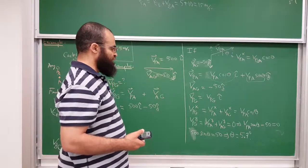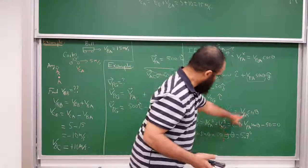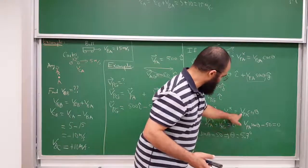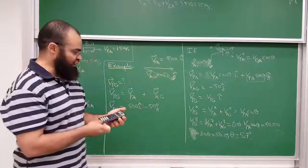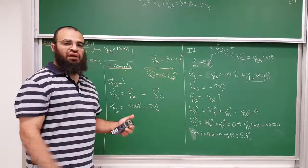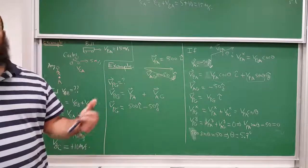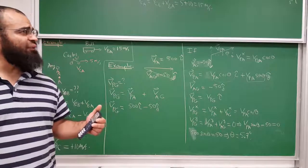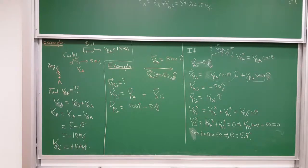And so if I ask you what's the velocity of the plane relative to the ground — knowing theta, you plug in 500 times the cosine of 5.7 degrees, and that gives you the velocity of the plane relative to the ground. And so that's it for relative motion. We might do a couple more problems at the end of the chapter, but for now that's it. I'm going to move to circular motion next, so I will do it in the next video.